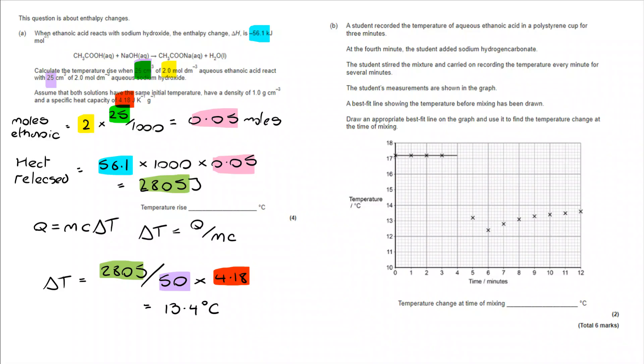Let's move on and take a look at B. A student recorded the temperature of aqueous ethanoic acid in a polystyrene cup for three minutes. At the fourth minute, the reaction took place. Sodium hydrogen carbonate was added. The mixture was stirred. And we carried on then recording the temperature from five minutes for several minutes onward. The measurements have all been plotted. A line of best fit has been shown for the temperature before the reaction has taken place. And you have got to add an appropriate line of best fit on the graph and then find the temperature change at the time of mixing. The time of mixing being four minutes.